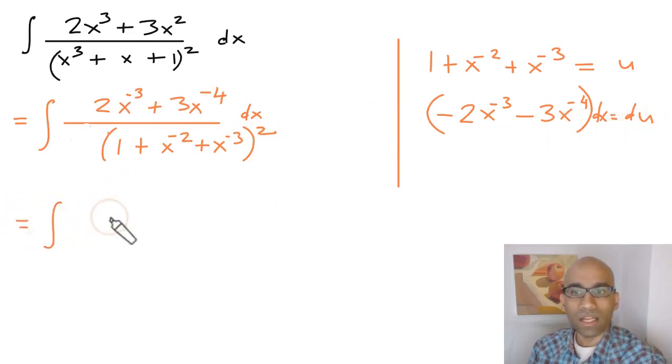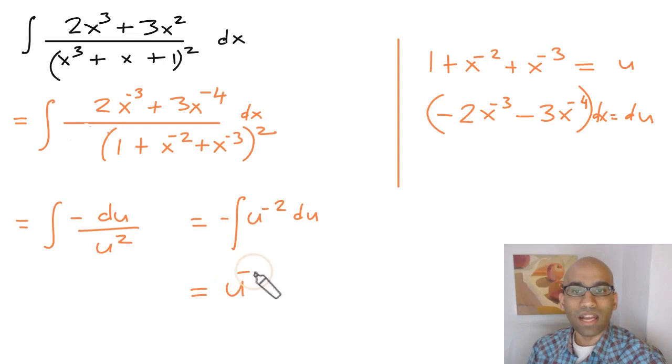So we're going to write down the integral of du divided by u squared. And now you know how to solve it. Of course this can be written as u power negative 2 du. Of course I've got a negative sign here, so bring this negative sign here, and then eventually we can write this as u power negative 2 plus 1 divided by negative 2 plus 1.